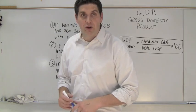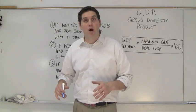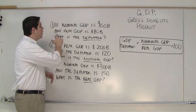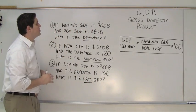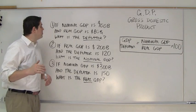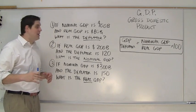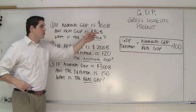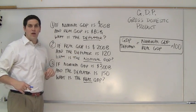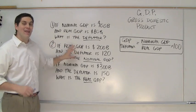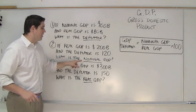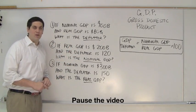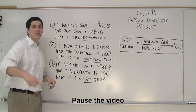I want you to try these three questions on your own, see how you do on them, then we'll go over the answers. I'll read the first one: if nominal GDP is $100 billion and real GDP is $80 billion, what is the deflator? Use that equation. Later on we're not looking for the deflator — I give it to you. You're looking for the nominal GDP and after that you're going to look for the real GDP. So three different questions. Good luck.